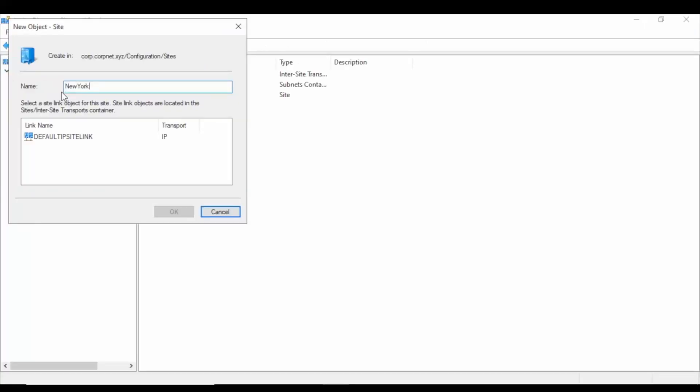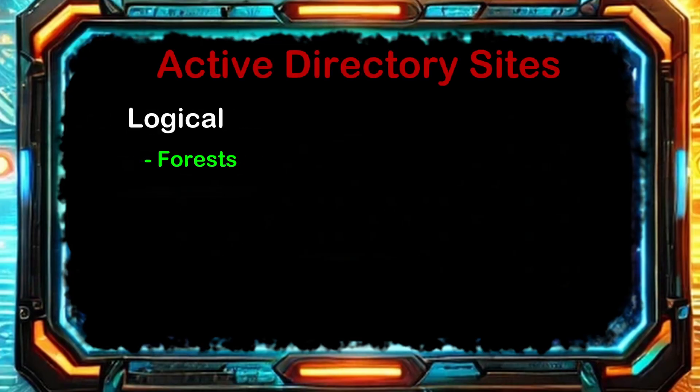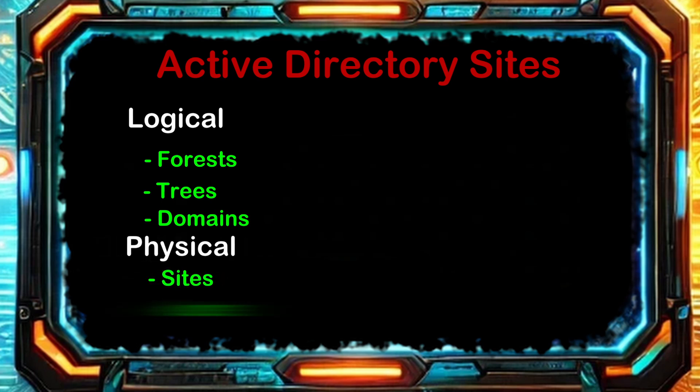In this lesson, we'll cover basic information about Active Directory, or AD sites. Active Directory uses forests, trees, and domains to represent the logical layout of the network. It uses sites and subnets to represent the physical layout of the network. Organizing the network physically into sites allows you to balance traffic flow and timing of replication traffic. It also ensures that users are directed to local resources.